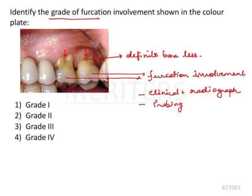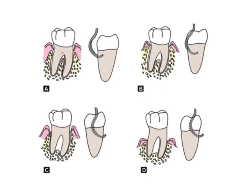The options here, according to Glickman's classification, are grade 1, 2, 3, and 4. Grade 1 is the least severe form and grade 4 is the most severe. Let's have a look at the classification system according to Glickman first.